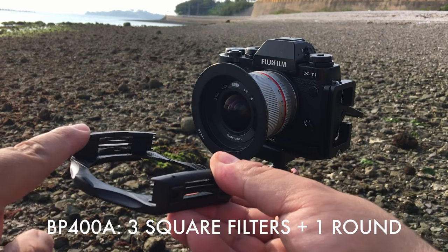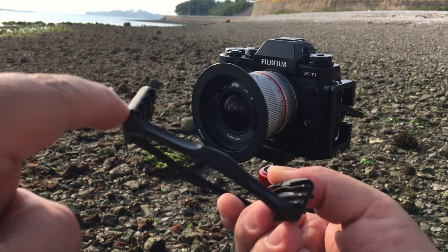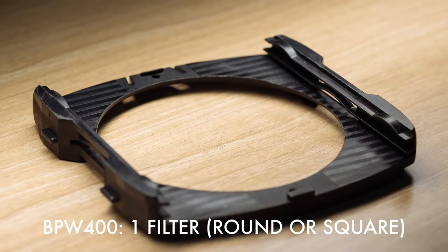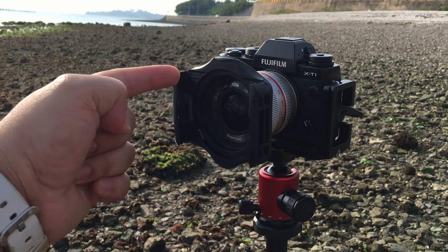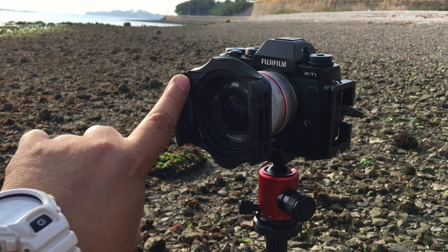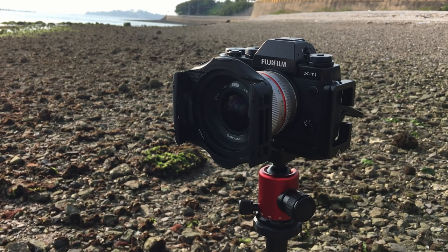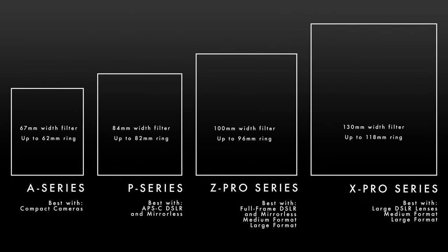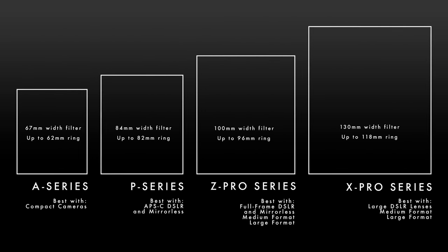This is the three-slot holder. You can put three square filters in the front and one more special round filter in the back slot, and you can stack different filters. Koken also makes a wide-angle version with only one slot for use with wider lenses — depending on your lens design, you might see the edges of the holder in the frame, causing vignetting. Koken makes four sizes: the compact A series, the medium P series we're looking at today — which works well with mirrorless and smaller DSLR lenses — and the larger Z Pro and X Pro series for larger cameras and lenses.